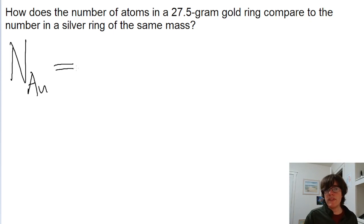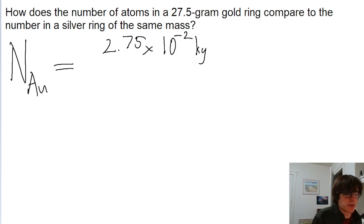The number of atoms in an object, especially if it's a pure substance, can be found by taking the mass of that object and dividing it by the mass of one atom. So in this case, it's a mass of 27.5 grams. We want this in kilograms, so that's 2.75 times 10 to the power of negative 2 kilograms.